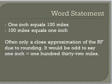Word statements are just an equation of 1 inch is equal to something — so 1 inch equals 100 miles. Sometimes you might say 2 inches equals 50 miles or 100 miles equals 1 inch. Typically a word statement, if you were to convert it to a ratio scale, wouldn't be in an even increment. It would be really odd to say on a map 1 inch equals 132 miles. So there's some rounding that happens back and forth when you use word statements.